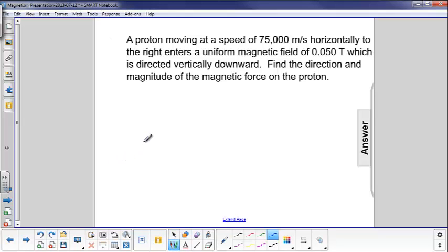First let's draw what we have. We have a proton moving to the right, so that's the velocity, and the magnetic field is vertically downward.